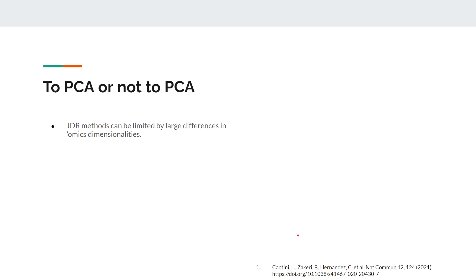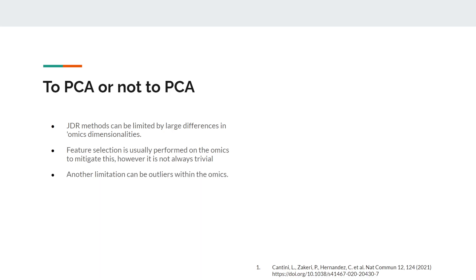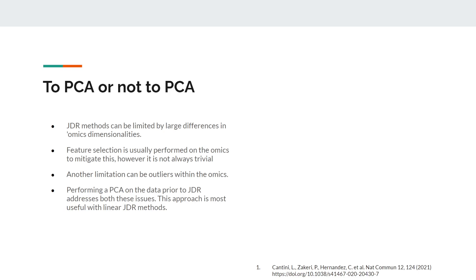One of the limitations of JDR methods is large differences in omic dimensionality. For example, if we have a dataset with 20,000 features and one with 400,000 features, that would heavily bias the model, so we would need to perform some sort of feature selection — however, this is not always trivial to do. Another limitation can be outliers within the omics, which again might not be trivial to deal with. One approach that can mitigate both these issues is to perform a PCA on the data prior to JDR.